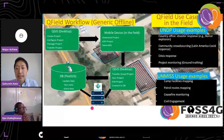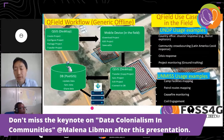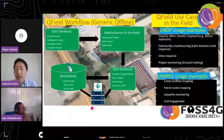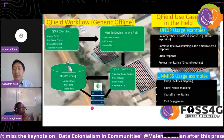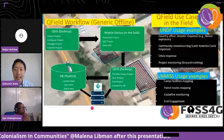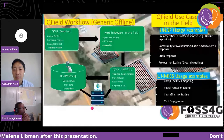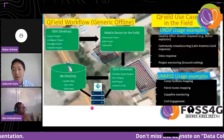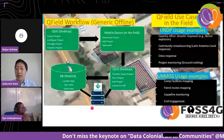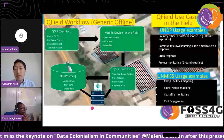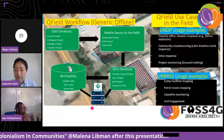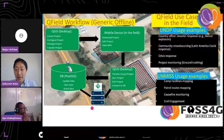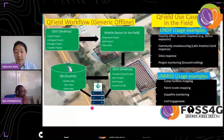In terms of use cases for QField, at the UNDP country office there were activities for disaster response — for example, a Beirut explosion response, community crowd-sourcing in Latin America, and COVID response. For UNMISS use cases, QField was used for camp facility mapping, patrol routes mapping, ceasefire monitoring, and civil engagement. These are the main use cases.